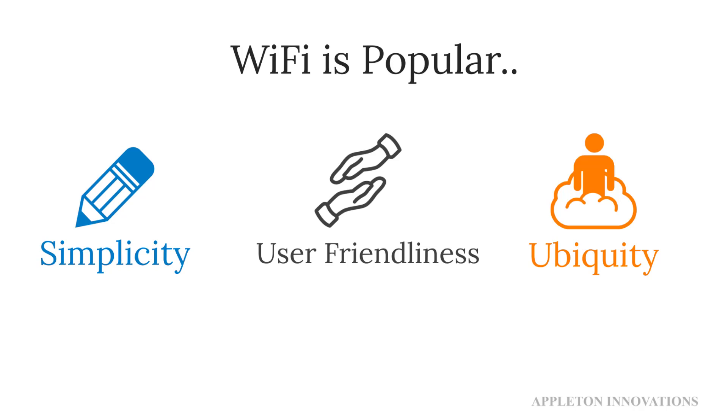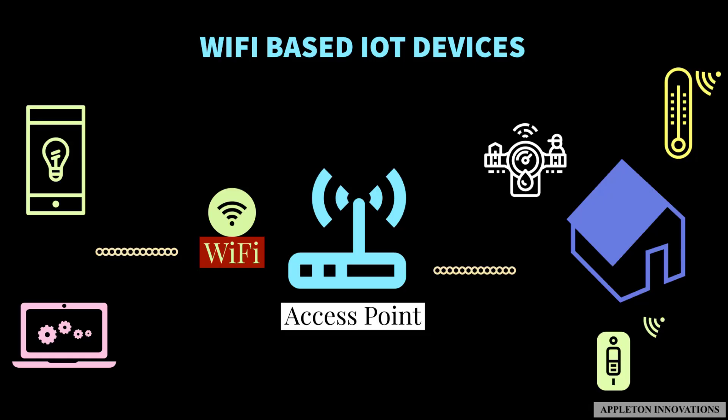However, the simplicity, user-friendliness, and ubiquity of Wi-Fi set the connectivity standard for future devices embedded in the IoT. Most IoT devices today are embedded with Wi-Fi chips. Wi-Fi technology is used to connect IoT devices to the internet — you can control home appliances such as light bulbs, AC, or fans using a smartphone application, and you can even monitor room temperature and humidity remotely from anywhere in the world.